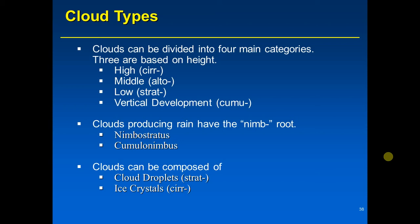High clouds are so far above the surface that they are made exclusively of ice crystals. For two cloud categories it's not so clear-cut: clouds beginning with 'alto-' (middle clouds) as well as clouds beginning with 'cumul-' can be made of both cloud droplets and ice crystals.